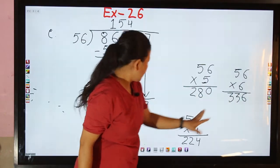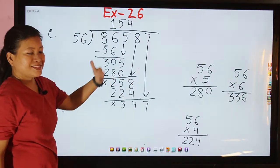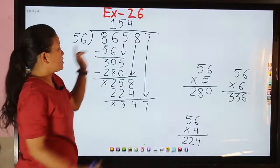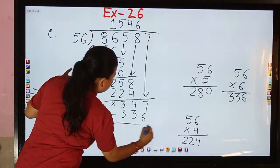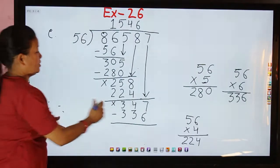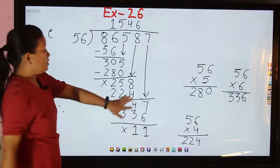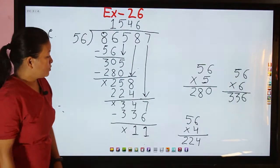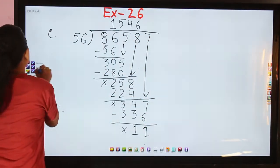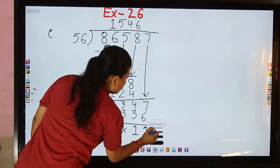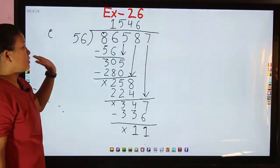Bring down the next digit, 7, to get 347. Six times 56 is 336, which is suitable to subtract. So we write 6 as the next quotient digit. Subtracting: 7 minus 6 is 1, 4 minus 3 is 1. There are no more digits to bring down, so 11 is the remainder and 1546 is the quotient.